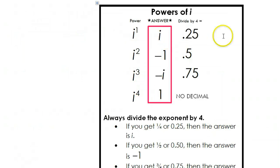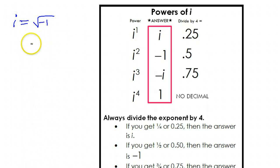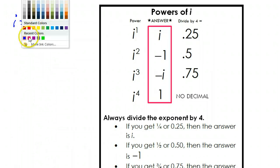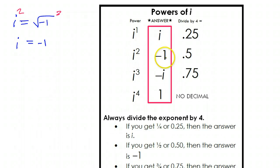Here's the key to the powers of i. First of all, i to the 1 power is just i — that's just common sense. i squared is negative 1. i is defined as the square root of negative 1, so it makes sense that i squared equals negative 1 because if we squared both sides, the radical would go away. So that's worth memorizing: i squared is negative 1.